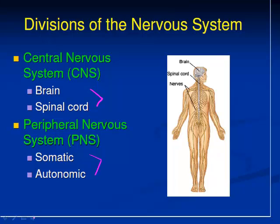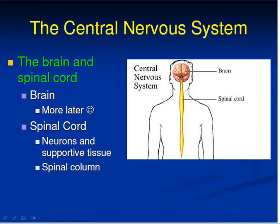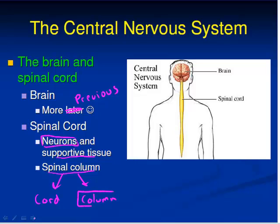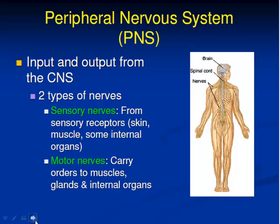Now let's look at the central nervous system. We've already covered the brain previously, so here we're looking at the brain and the spinal cord. This is a collection of specific types of neurons, which we'll talk about in a couple of videos, plus some supportive tissue. We also have our spinal column, which is made up of the spinal cord and the vertebrae that support and protect that cord.